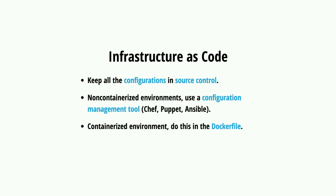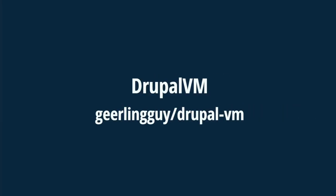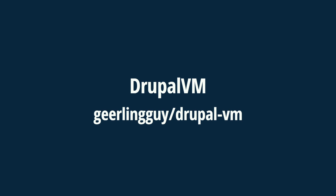If you aren't using Docker, you can use tools like Ansible or Puppet, or a VM. There's a nice project called Drupal VM that you can take advantage of. Ideally, you should require Drupal VM as a dependency in your project - something like Composer require geerlingguy/drupal-vm - which gets the project in your vendor directory. From there you make small changes to config files, specifying which image you require and how much memory to assign. By doing this, you can share the same environment with everyone on your team - no more 'it works on my machine.'